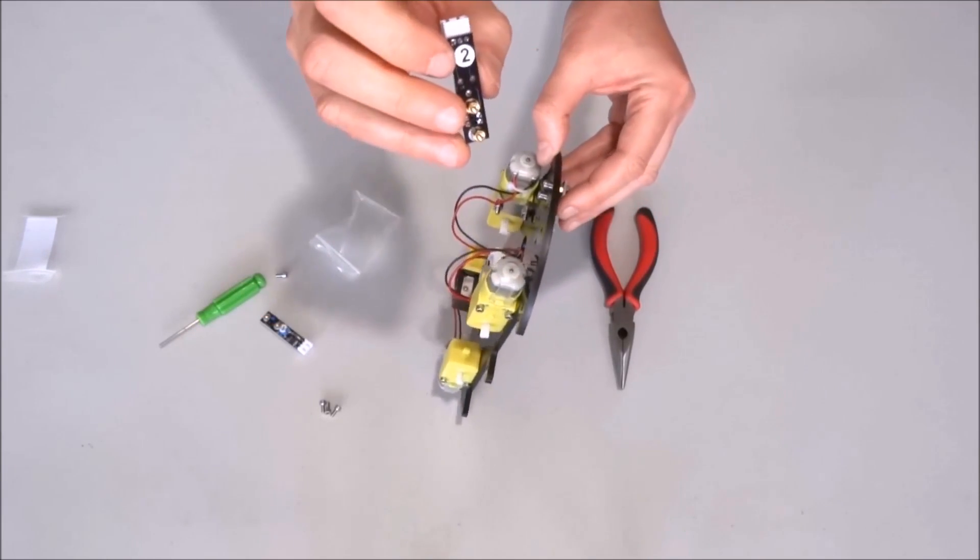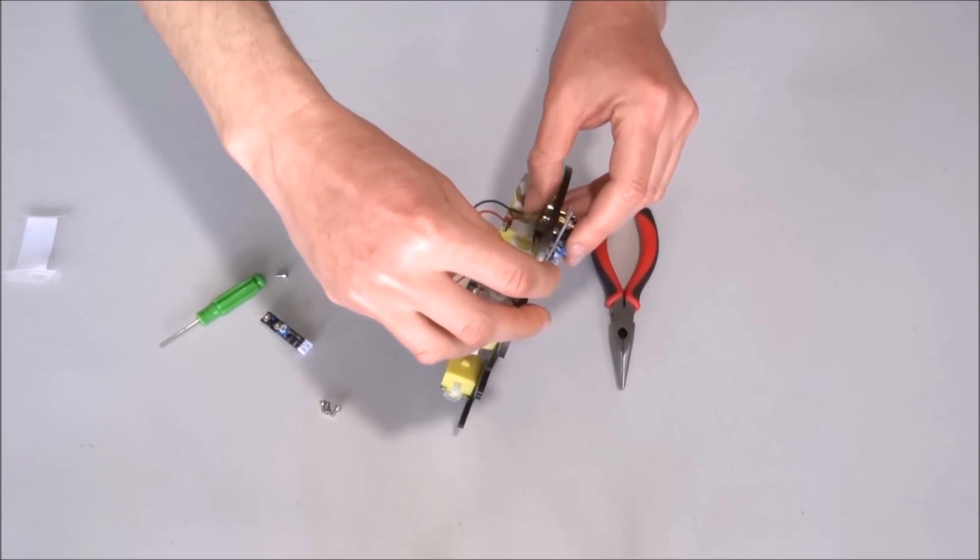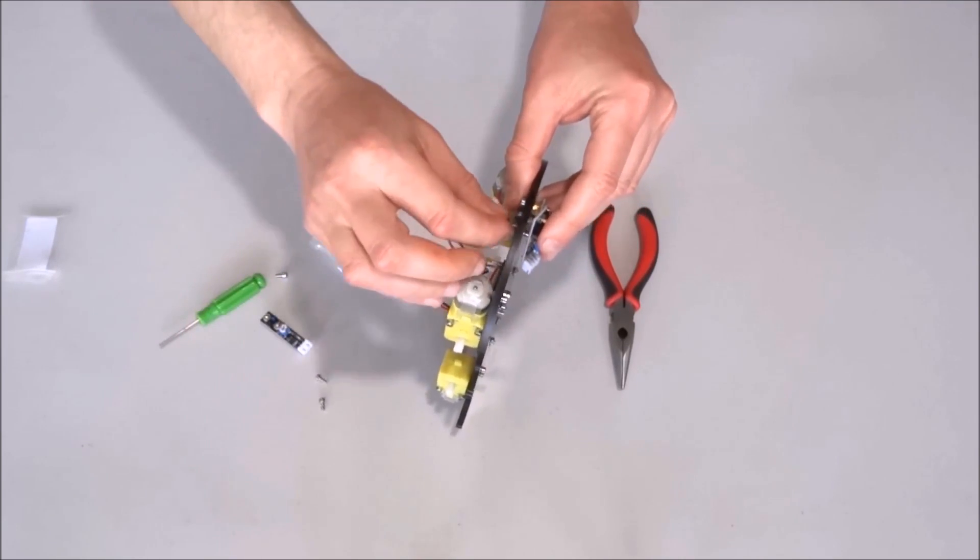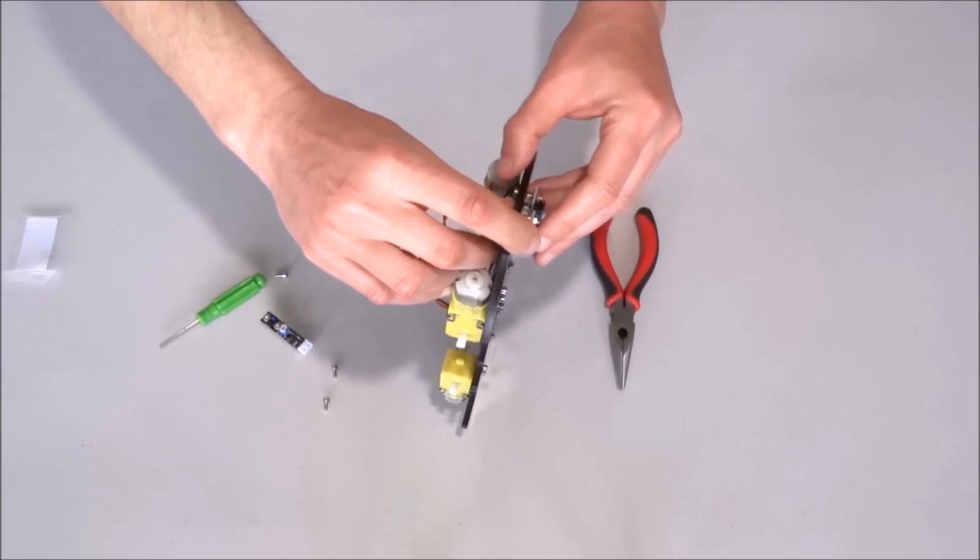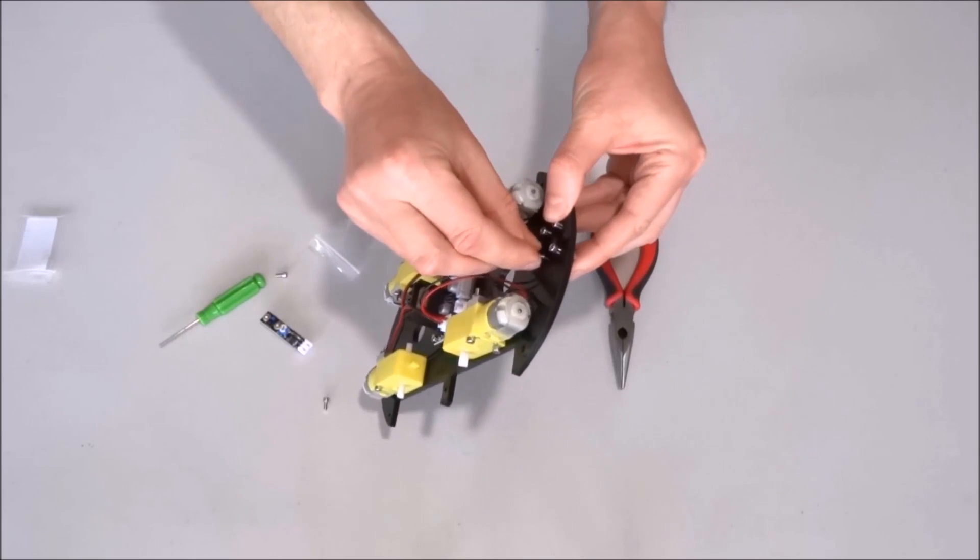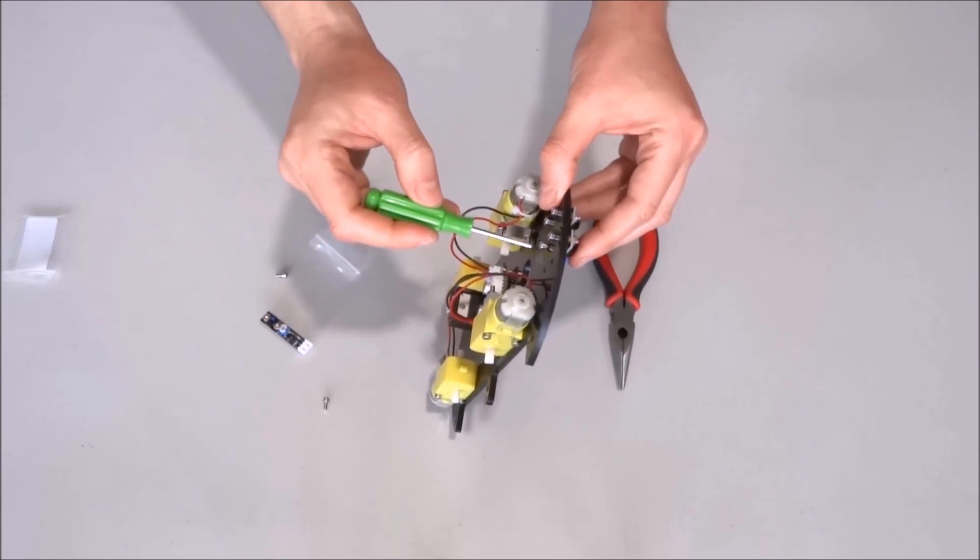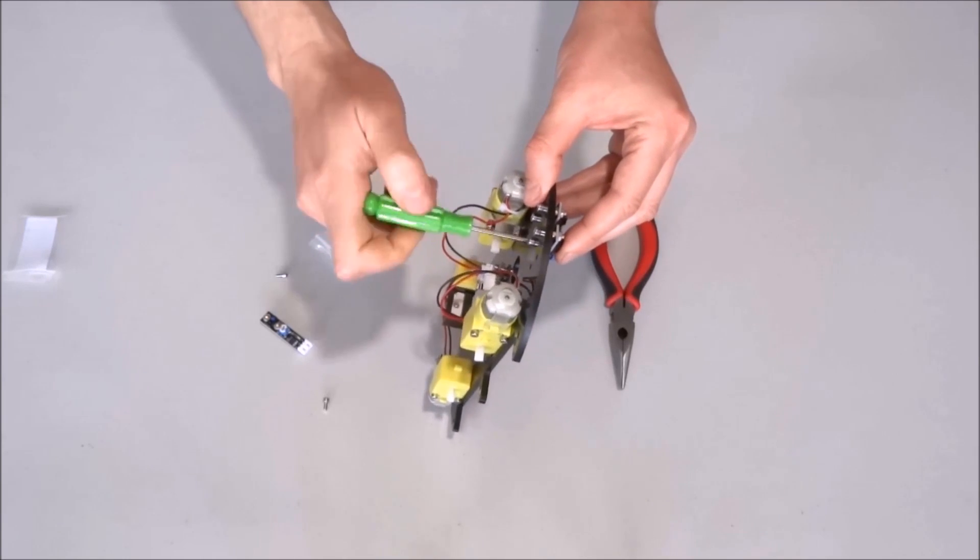Next we'll take sensor number two and mount it in the center, exactly the same way, using the two screws to screw into the two spacers.